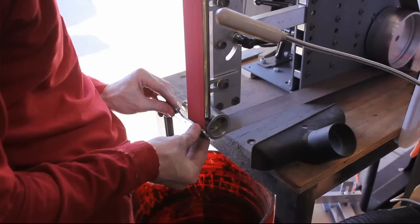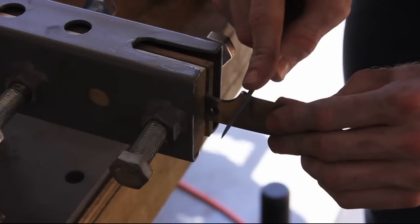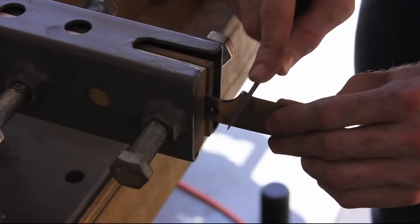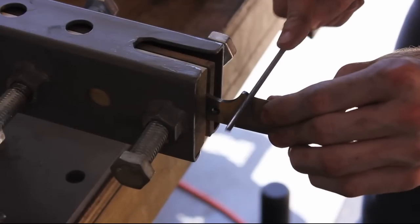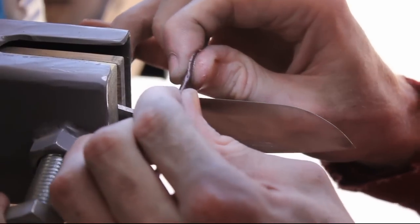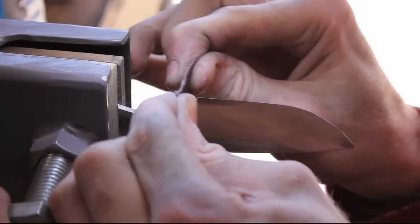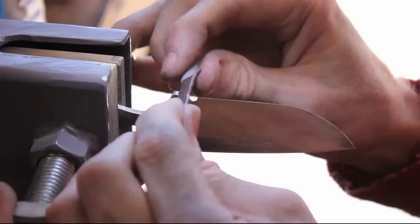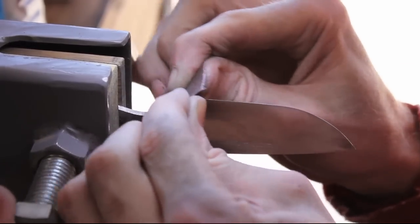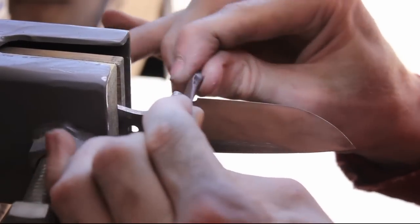After I got the blade bevels ground out, I went over to my idler wheel to take off some material on the handle. And then I took a chainsaw file to file in the sharpening notch on this blade. Just as a precaution before the heat treat, I took some 220 grit sandpaper and really cleaned up the area by the sharpening notch because some of those big file marks are hard to take out after the blade's been hardened.